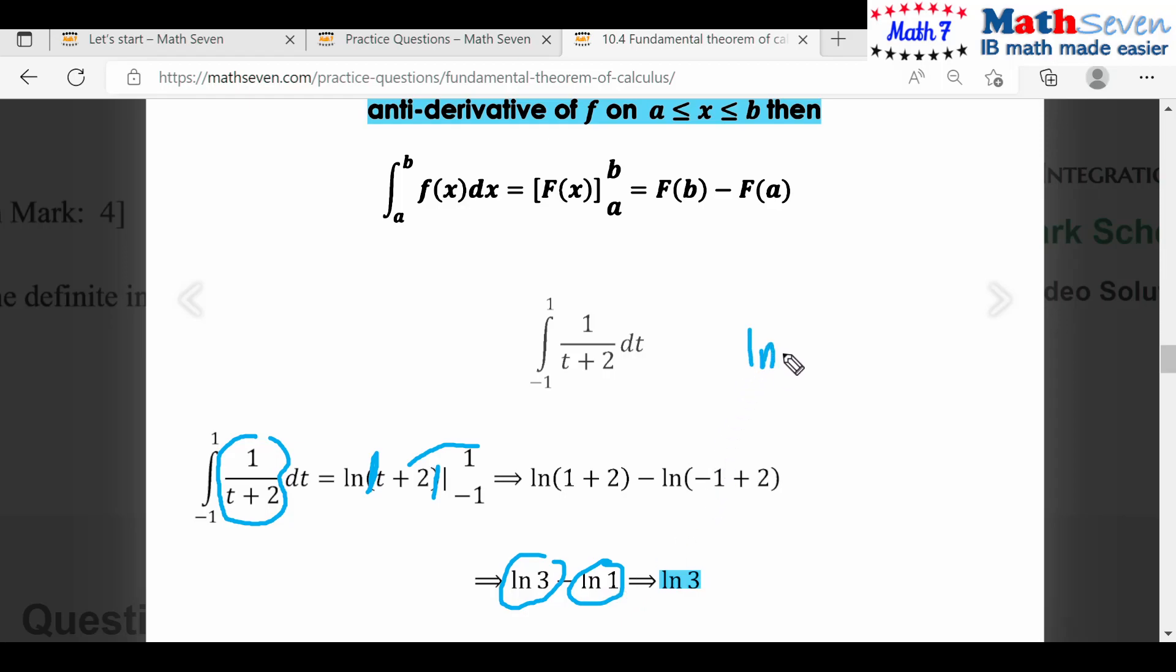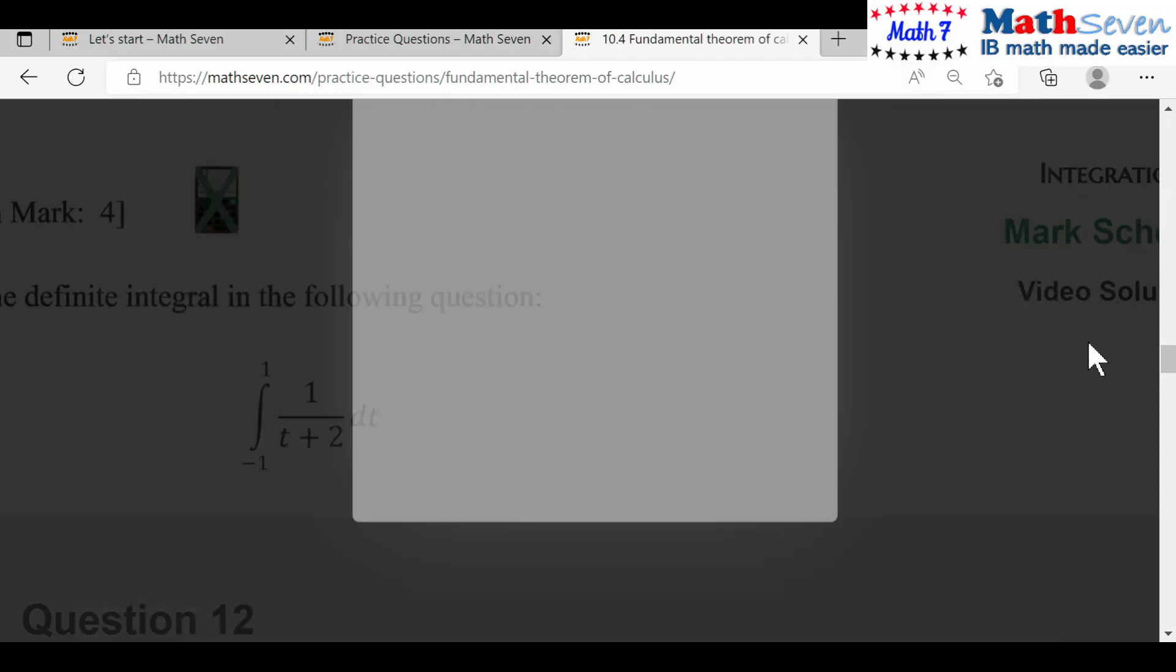It's like you're saying ln three over one, because with subtraction it converts to division. So ln three over one is the same as ln three. Or you say that ln one is zero. So of course the answer is ln three, whichever way you want, it will be solved.